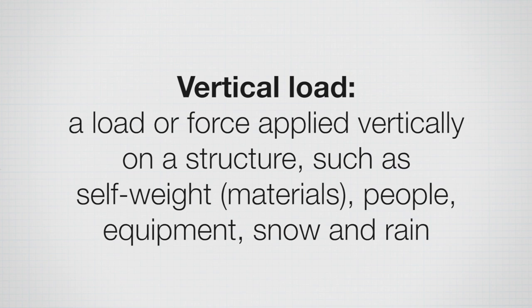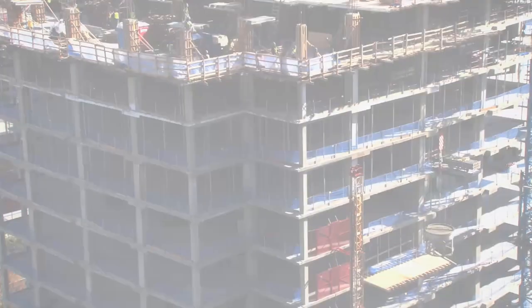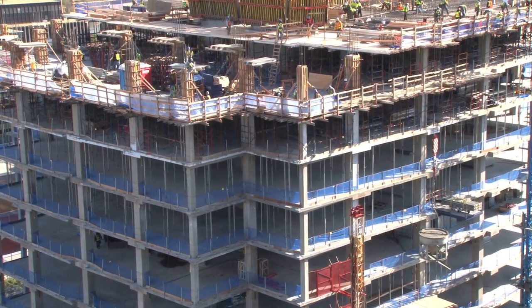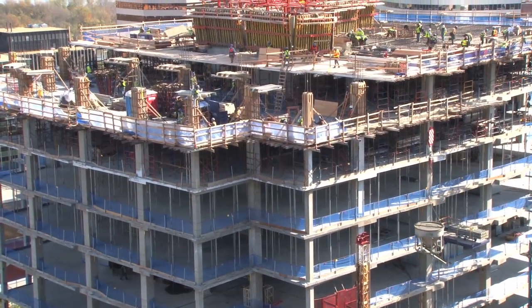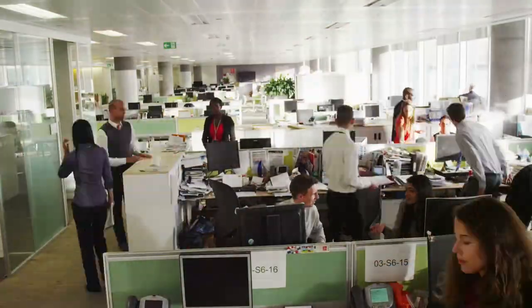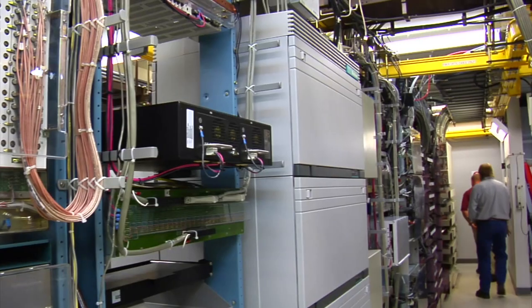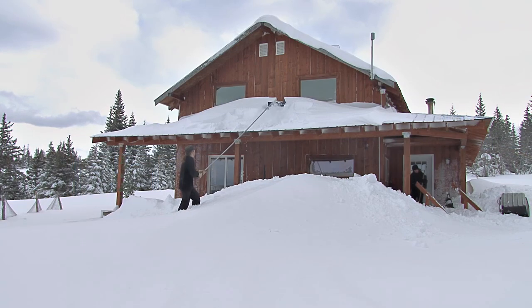The first thing an engineer would do is consider the different types of loads a building will be subjected to. Vertical loads are among the main ones. These come from self-weight — the materials themselves, whether concrete or steel — which must reach the ground. We also get applied loads from people, furniture, equipment, and other materials inside the building. Additionally, snow on the outside is a significant vertical load, and rain can pool on the roof.